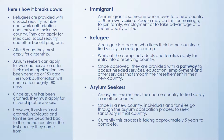Here's how it breaks down. Refugees are provided with a Social Security number and work authorization upon arrival to this country. They can apply for Medicaid, Social Security, and other benefit programs. After five years, they must apply for citizenship. They don't have to pass the test if they're not able to, but they must apply and keep trying.